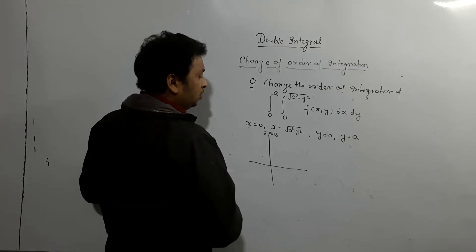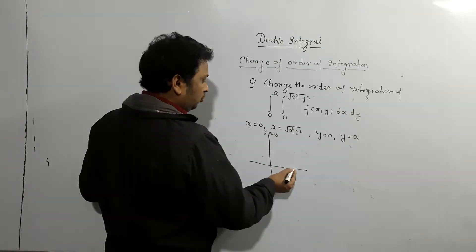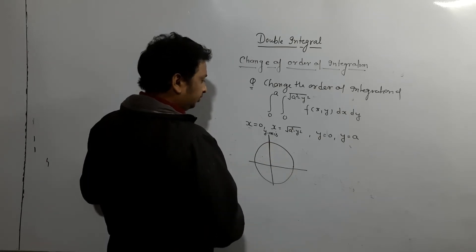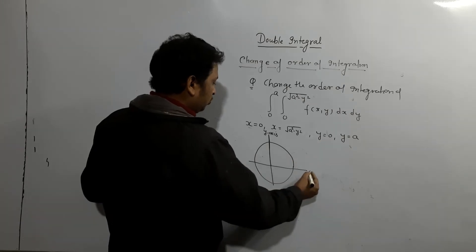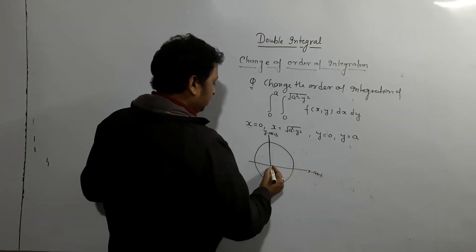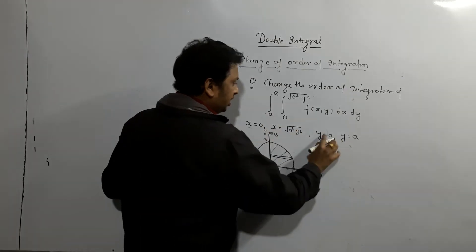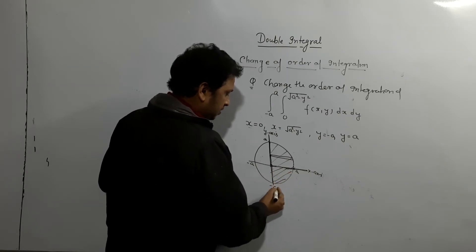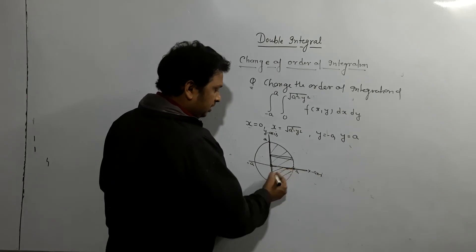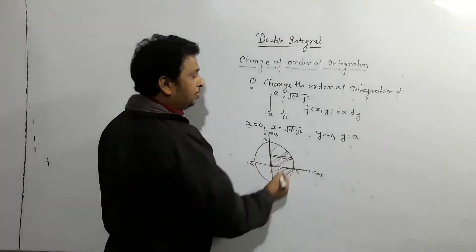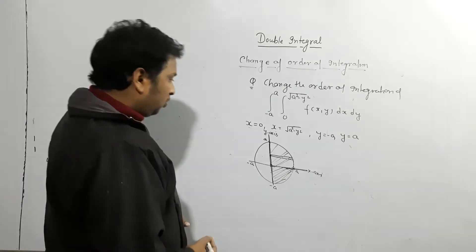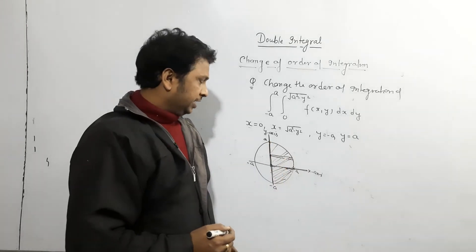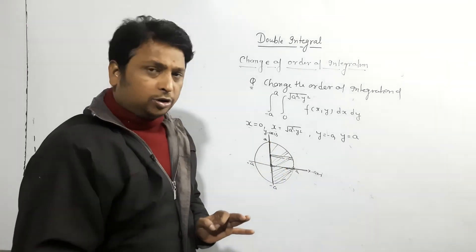x = √(a²−y²) means x² + y² = a², which is a circle with origin as center. y = 0 means this is the x-axis, and the limit goes up to a. So this is the picture — it's only the half circuit on the positive side.